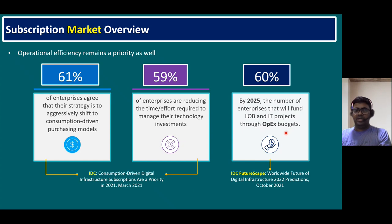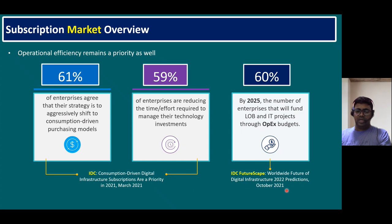According to IDC FutureScape worldwide digital infrastructure 2022 predictions, released October 2021, in the future most organizations will keep moving from CapEx expenditure toward allocating their budget on an OPEX model. OPEX is a kind of consumption or subscription model — similar to how we pay for utilities at home.